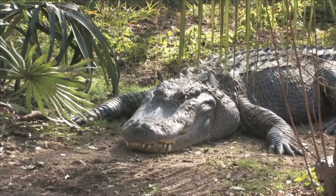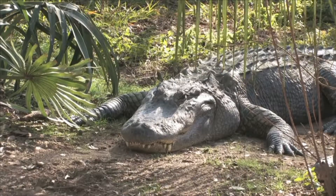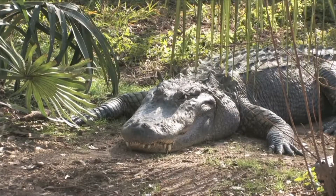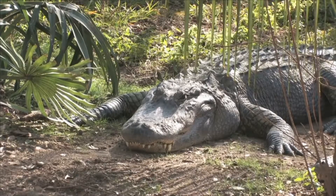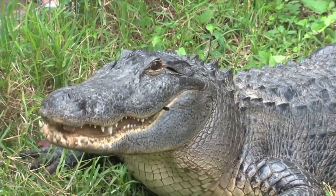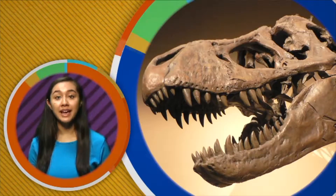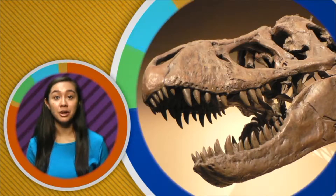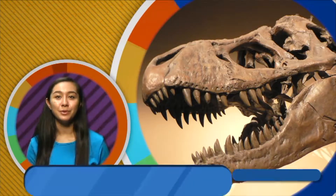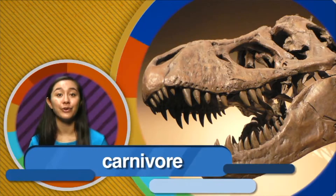How? Well, one way is for scientists to look to animals of today for clues. For example, if you look at the teeth of a real live alligator, you'll notice that its teeth are pointy and very sharp too. What does an alligator eat? Other animals. So that's a clue to scientists that dinosaurs with pointy sharp teeth probably ate other animals too. Animals who eat meat are called carnivores.